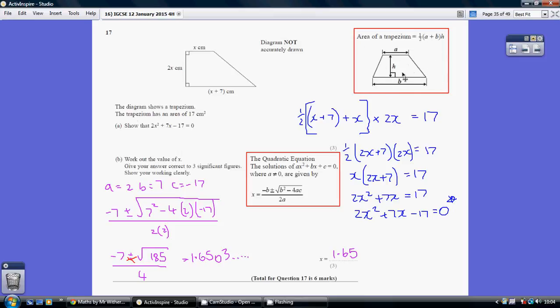The area of a trapezium is half the two parallel sides added together, multiplied by the distance between the two.